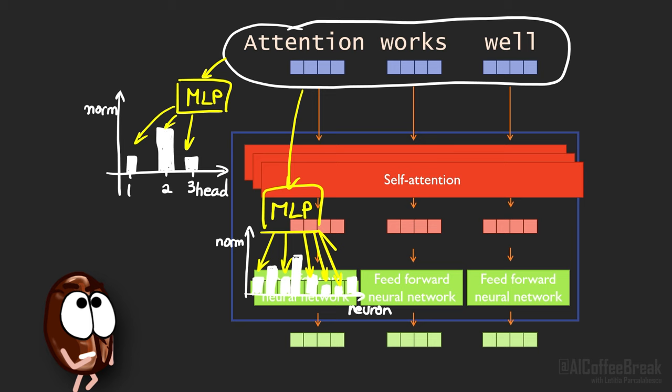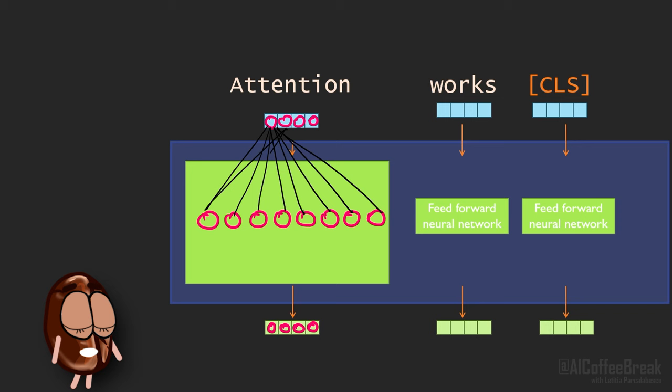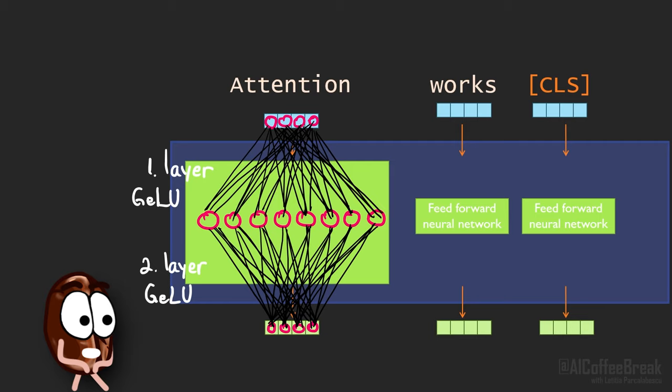Did you wonder why one can get away with using just 20% of attention heads with the highest norm and just 5% of MLP neurons with highest norm without losing performance? Well, the authors point out that contextual sparsity in MLPs comes because the ReLU or GELU activation functions set all negative activations to 0 anyway.